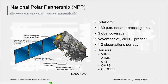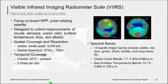Another satellite is the Suomi National Polar Partnership, also known as Suomi NPP, launched in 2011 providing global coverage with a 1:30 p.m. equator crossing time and near-daily revisit rate. The VIIRS sensor — the Visible Infrared Imaging Radiometer Suite — is designed to collect measurements of ocean color, clouds, aerosols, surface temperature, fires, and albedo. Between the MODIS and VIIRS sensors, we have the oceans covered. However, satellites and their sensors do not operate indefinitely, which is why NASA and other space agencies continuously invest in the development of new satellite sensors.